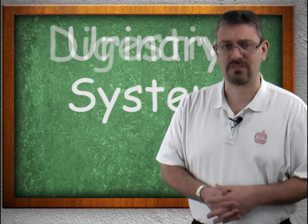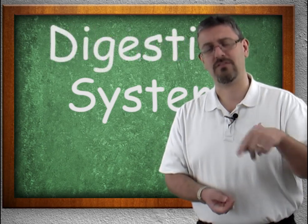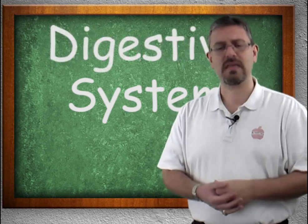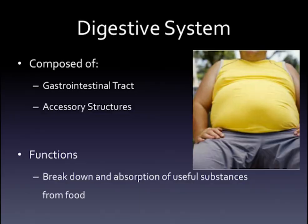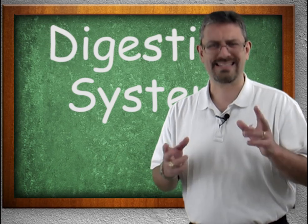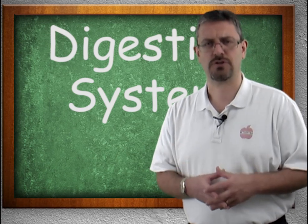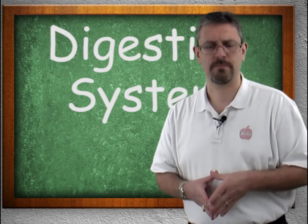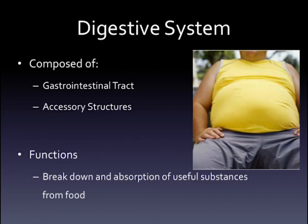The digestive system is composed of the gastrointestinal tract, or GI tract, as well as accessory structures — your teeth and your tongue are accessory structures that help the overall function. Its job is to break down and absorb useful substances from food.